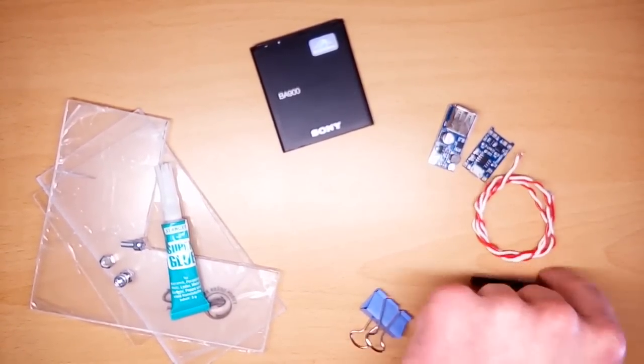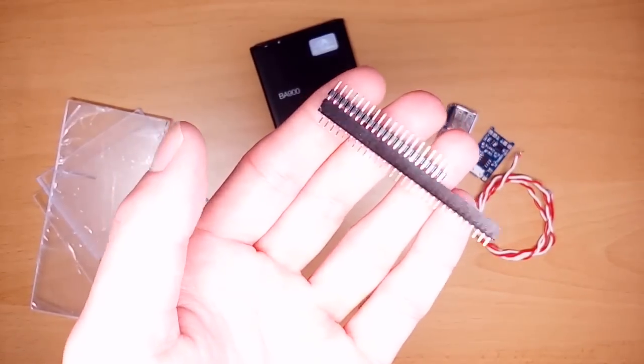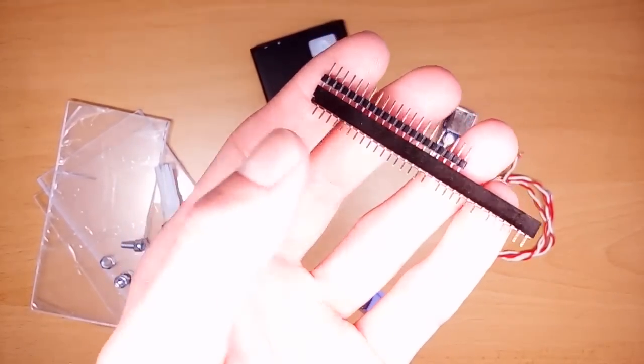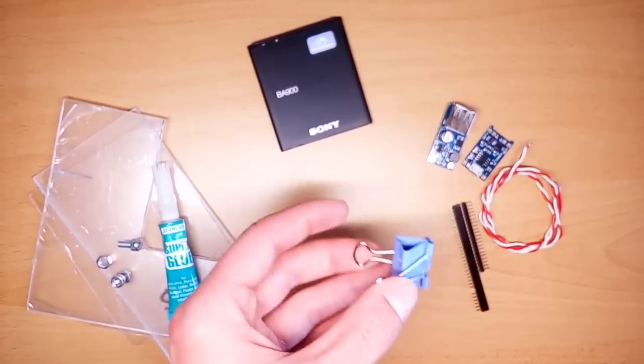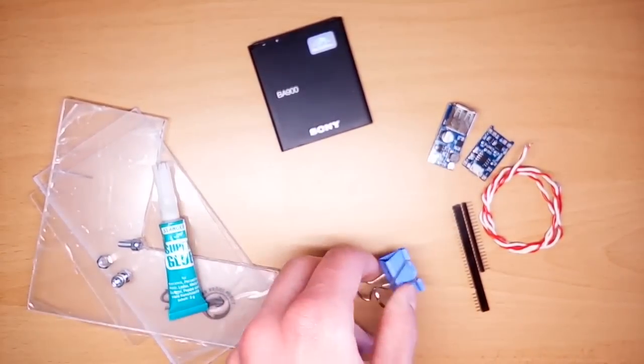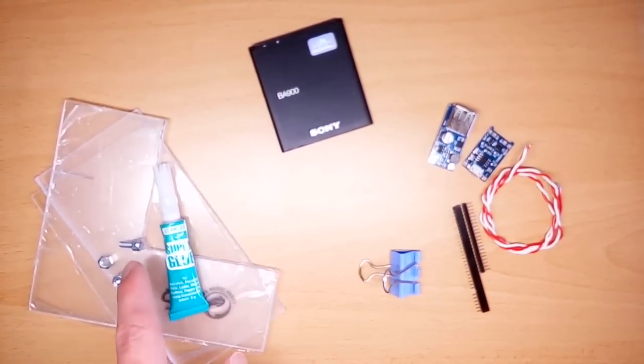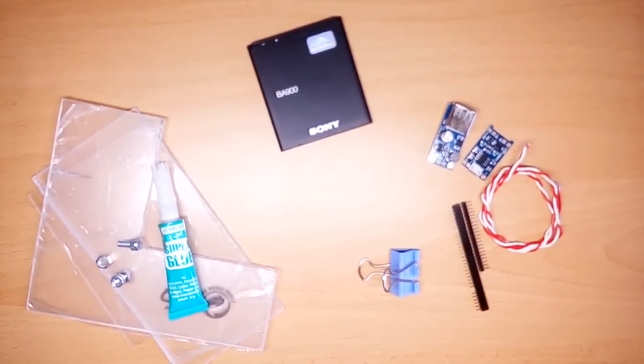You are also going to need some wire, and something that you can use as battery pins. I use those Arduino pins. You are also going to need a usual paper clamp, just like this one. And some leftover acrylic, plus some screws and superglue to make an enclosure for your project.